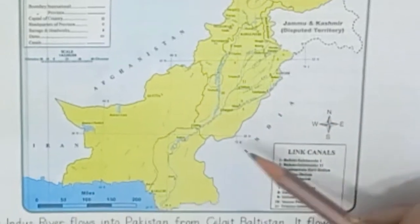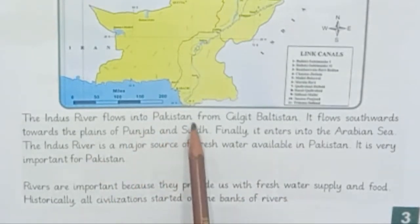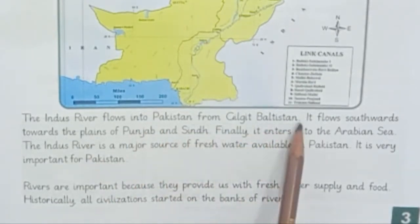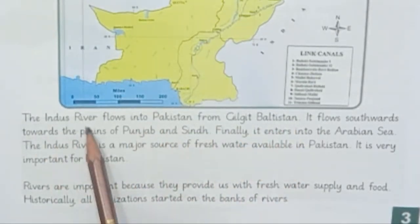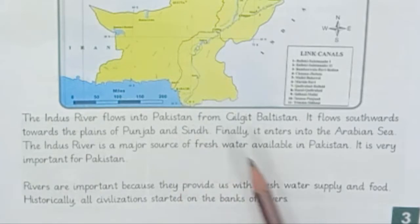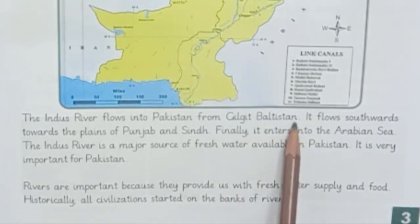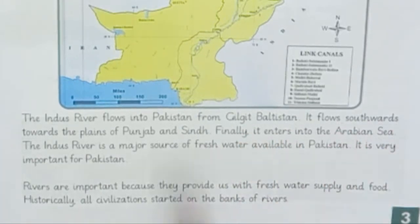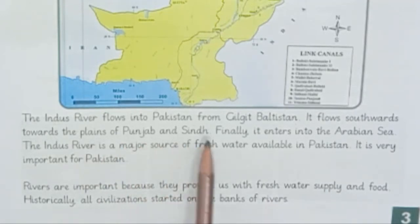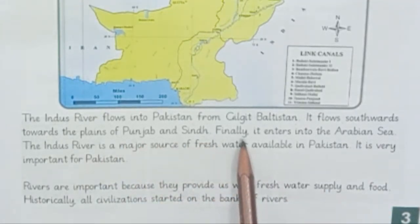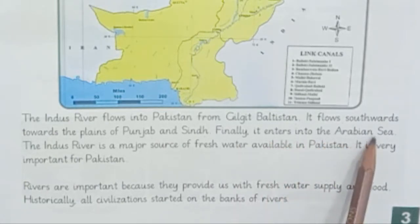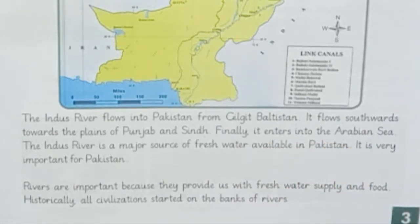The Indus River flows into Pakistan from Gilgit-Baltistan, which is where it starts. It flows southwards towards the plains of Punjab and Sindh. Finally, it enters into the Arabian Sea.